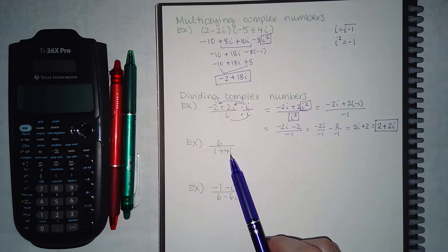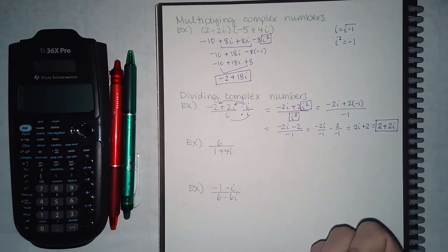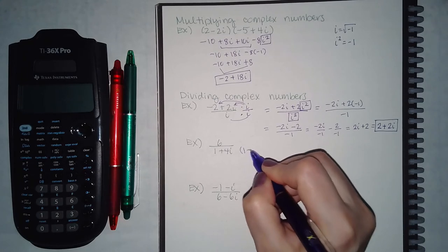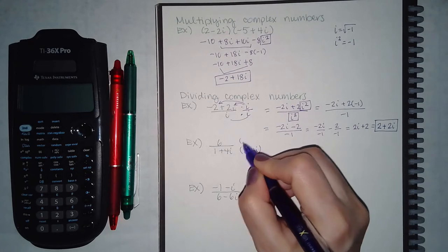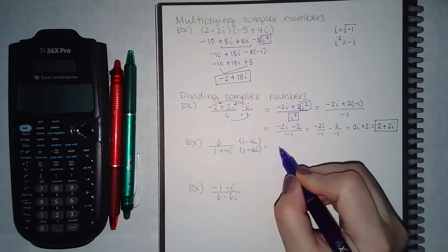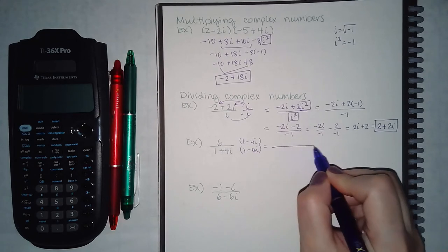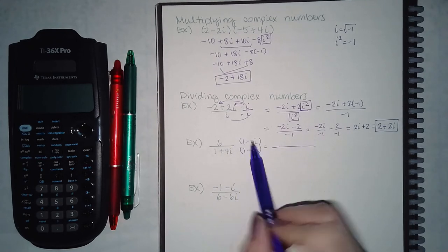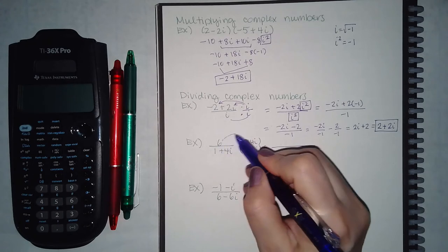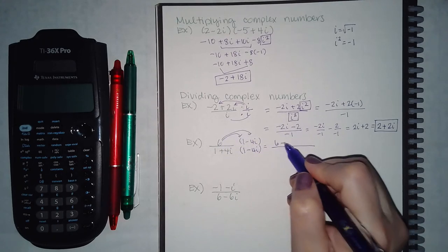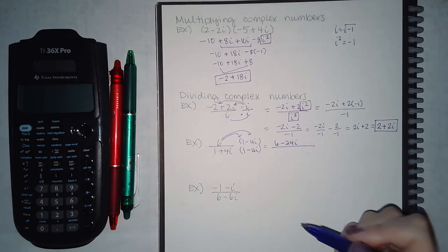For the next problem, you have a square root in the denominator with two terms, so the strategy is to multiply by the conjugate — that's the same two terms but with the opposite sign in the middle. We multiply by 1 minus 4i on the top and bottom. On the top I have a monomial times a binomial, so I distribute and get 6 minus 24i.